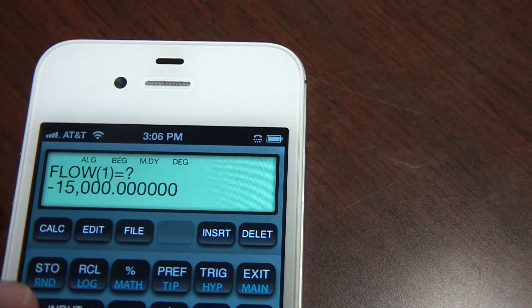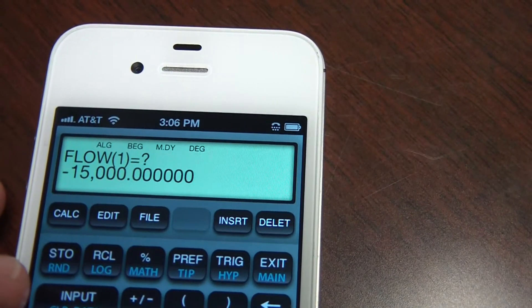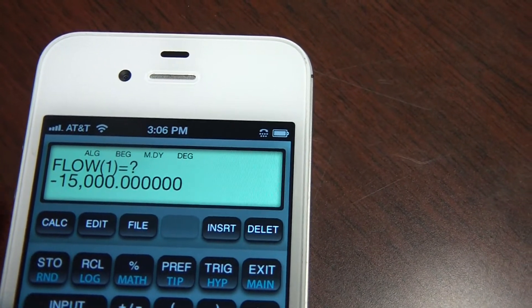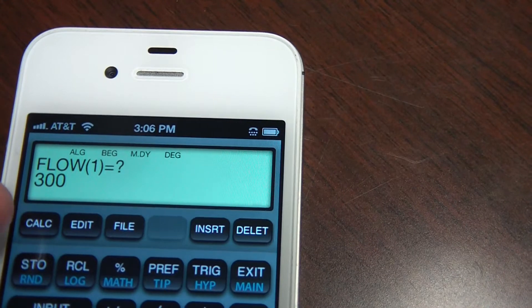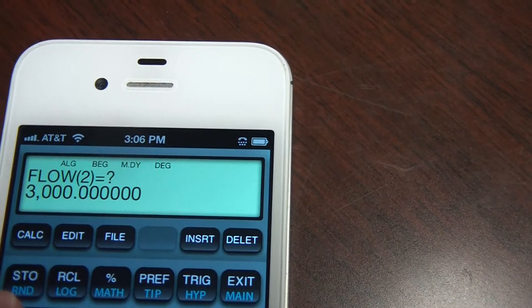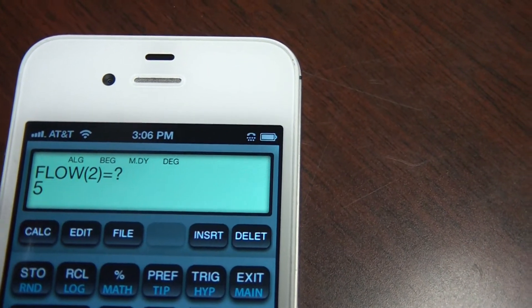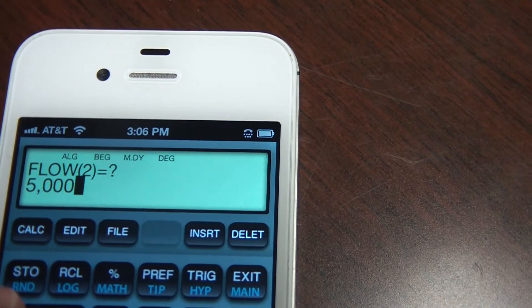The next cash inflow for year one is $3,000 coming in. Year two it's asking me for is $5,000 coming in, positive.